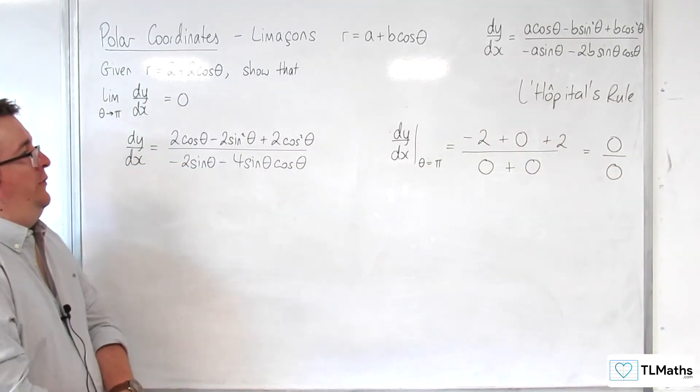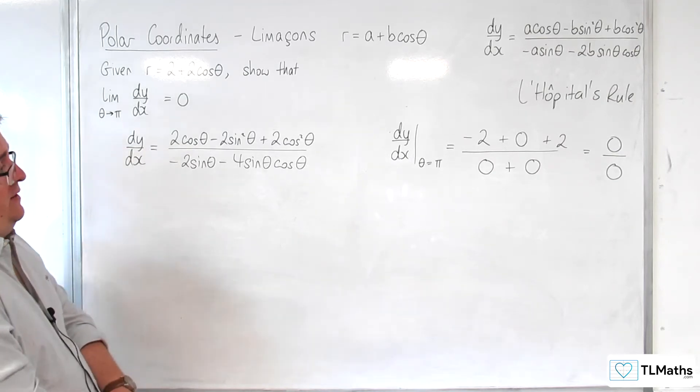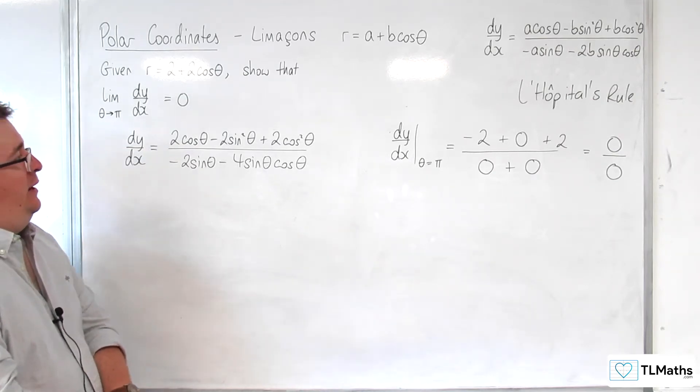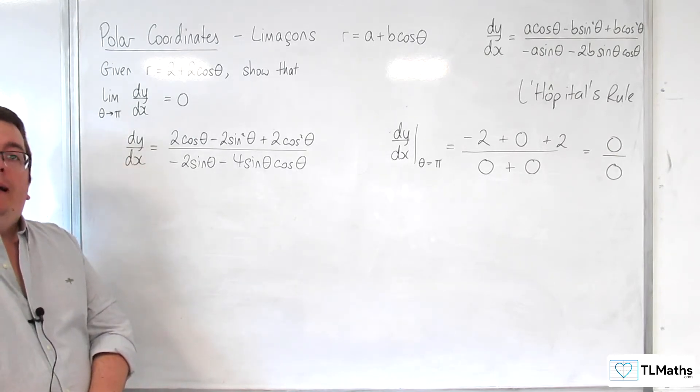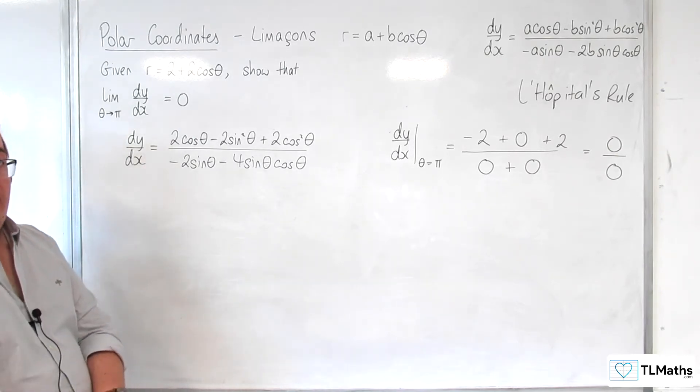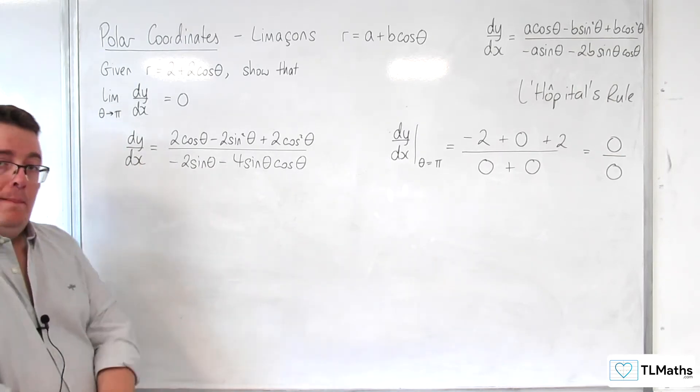So L'Hôpital's rule says that when we've got this indeterminate form, what we can instead do is take a look at differentiating the numerator and the denominator, and then take the limit of that instead. And that limit will be the same as the limit of this one.